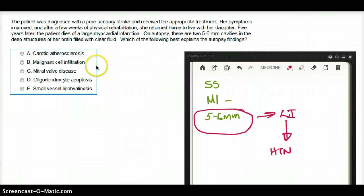Malignant cell infiltration, that is not going to give you a clear fluid-filled cavity. That's going to give you a mass. So that's out of the option. Choice D, oligodendrocyte apoptosis, that is more commonly seen in multiple sclerosis rather than lacunar strokes.